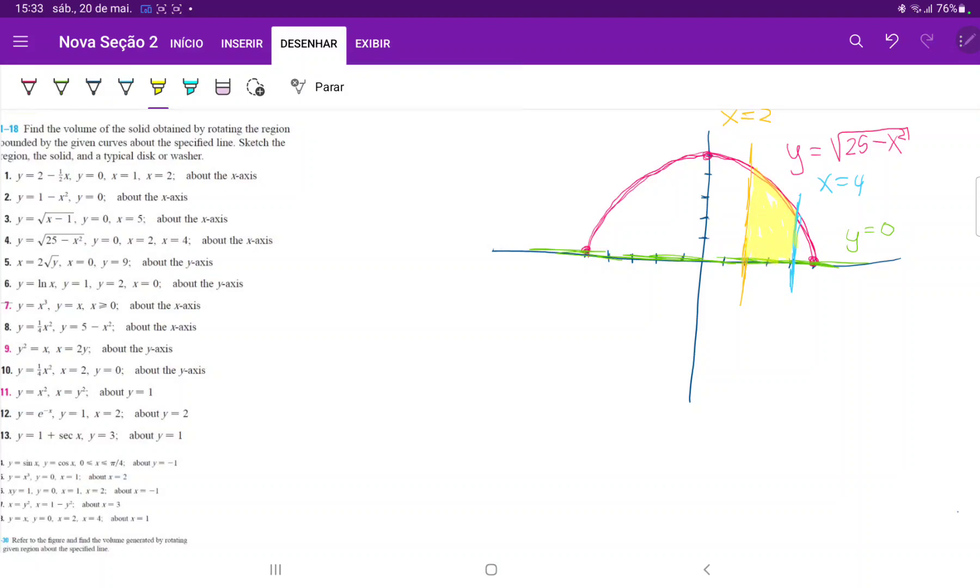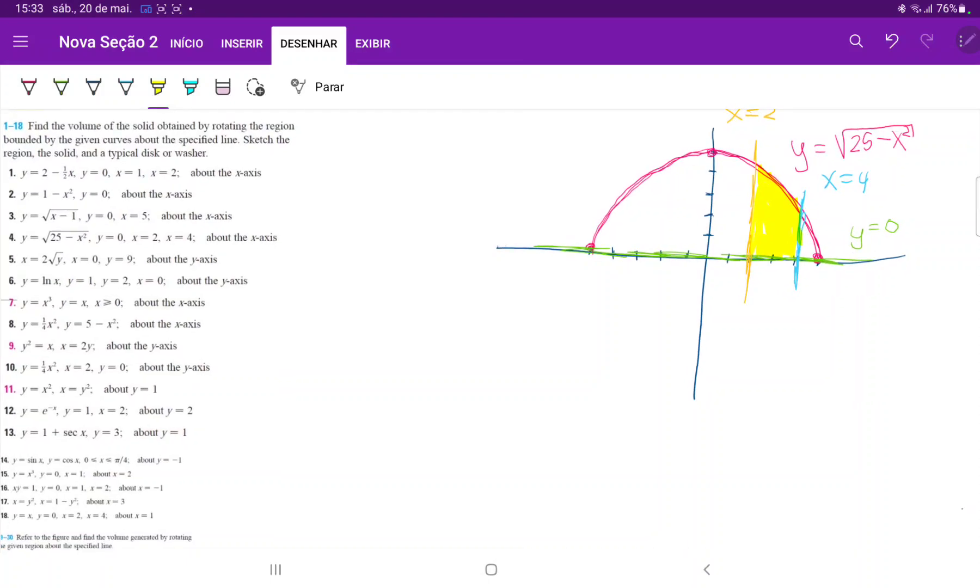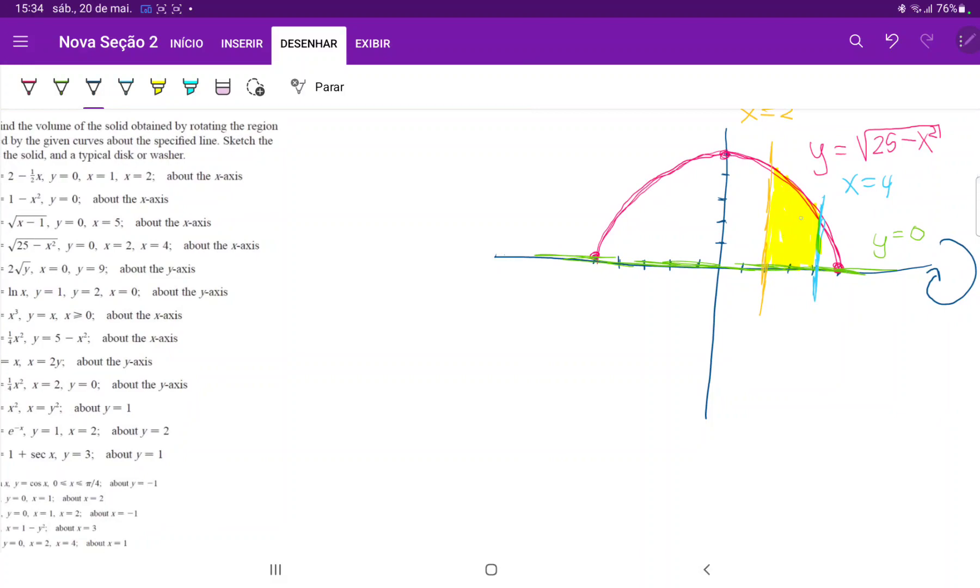And then we're taking this area and we are revolving about the x-axis. So we're revolving it about the x-axis like so. So when we revolve it around the x-axis, it does form a disk, right? So let's see if we can draw that in. So it should form something like this. And this disk will have an area, right?